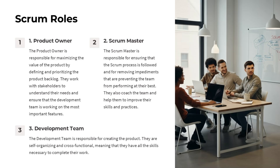The Scrum roles are critical to the success of any Scrum team. The product owner is responsible for defining and prioritizing the product backlog to maximize value, working closely with stakeholders to understand their needs. The Scrum master ensures the Scrum process is followed and removes impediments to team performance, coaching the team to continuously improve. The development team is self-organizing and cross-functional, with all the skills needed to create the product.